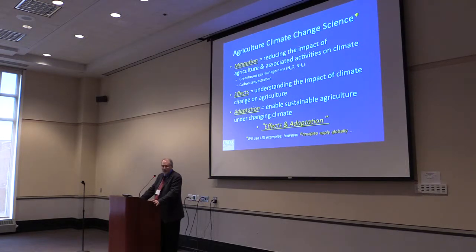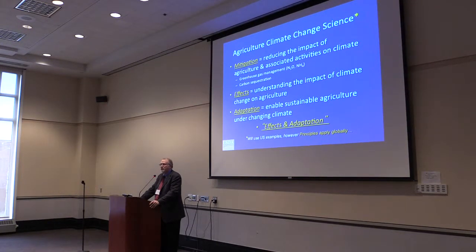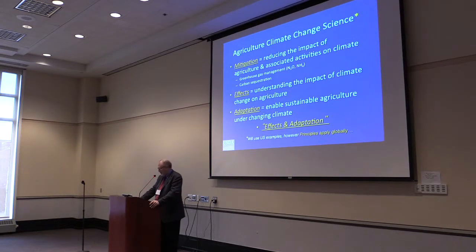The other half of the discussion deals with effects and adaptation — understanding the impact of climate on agriculture, the full systems of agriculture. The adaptation part is enabling sustainable agriculture under changing climate, meaning being able to deal with the negative effects and take advantage of any positive effects. We normally talk about mitigation and then effects and adaptation, and the information I'll be presenting is primarily focused on the United States, but the principles apply worldwide.